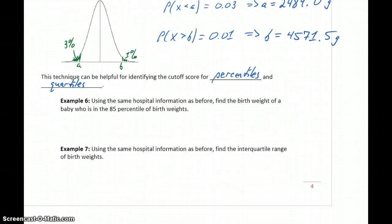So in example 6, we want to go back to that same hospital information we just used. First, find the birth weight of a baby who is in the 85th percentile of birth weights. So when we say the 85th percentile, that means 85% of birth weights are below the birth weight of our randomly selected newborn. So whenever we have a percentile, if you're in the 95th percentile, 95% of scores or values are below yours.